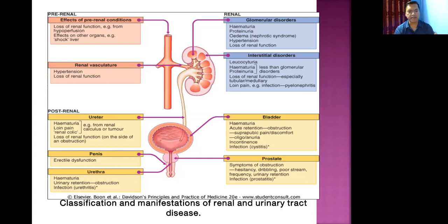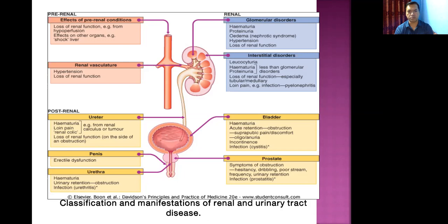In penile disorders, erectile dysfunction can occur. In urethral diseases, hematuria, urinary retention, and pain while passing urine are common. In prostatic disorders such as benign prostatic hyperplasia (BPH), especially in males older than 60–65 years, symptoms include hesitancy, dribbling, poor stream, increased urinary frequency, and sometimes acute retention of urine.